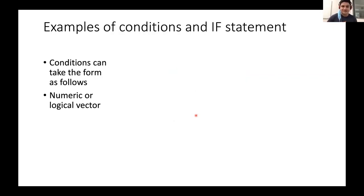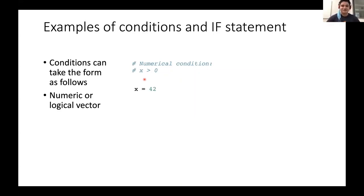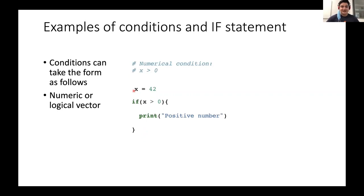Looking at a logical example, we set x equal to 42, then write an if statement: if x is greater than 0, print 'positive number.' Your code goes in between the two brackets. When you run this in R — first defining x equals 42, then running your if statement — you get the output 'positive number.' If you had a different number, such as x equals negative 3 or anything below 0, you wouldn't get any output.